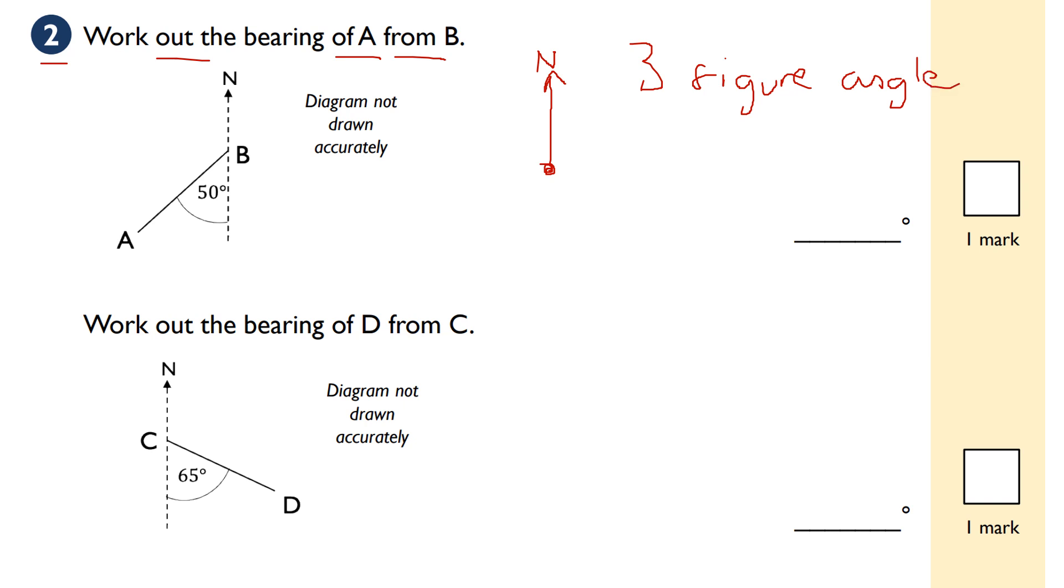Angles on a straight line add to make 180, and angles around a point add to make 360. That's another key point you should know for this topic.